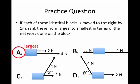Well, the largest amount of work being done on the block is in case A. In this case both the two newton force and the four newton force point in the right-hand direction and that's in the same direction as the displacement. So, the net work would be the six newtons times that one meter.